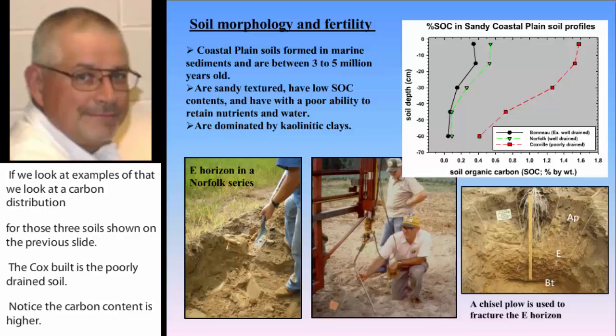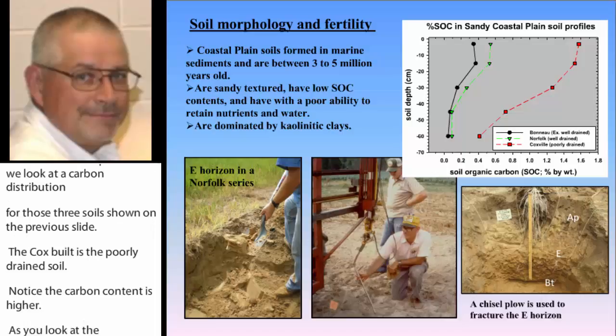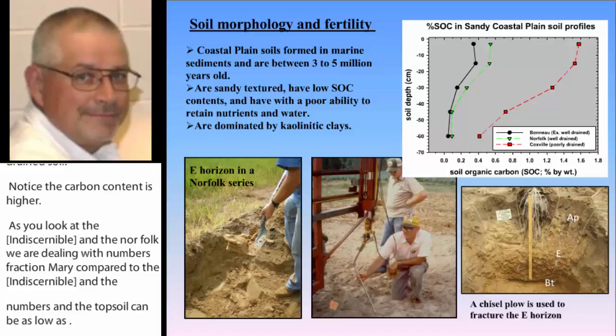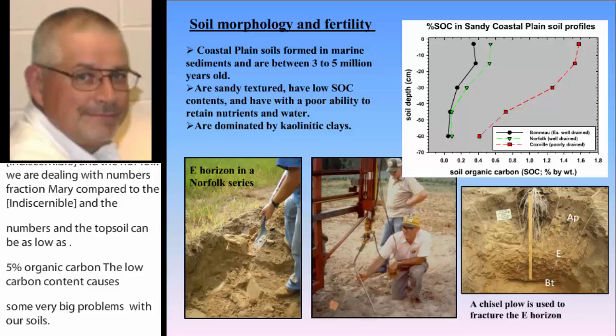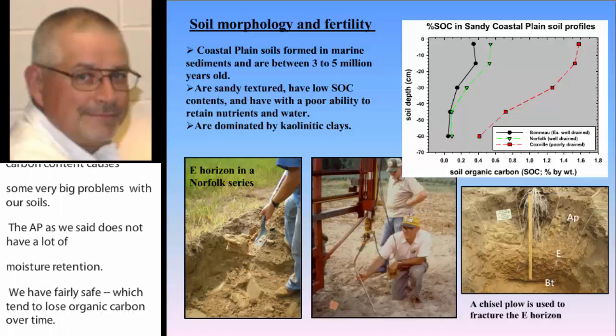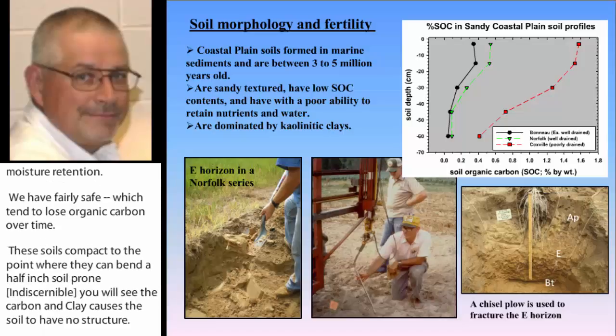The low carbon content causes very big problems. The Ap does not have a lot of moisture retention capacity. We have fairly thick E-horizons which tend to lose organic carbon over time. Consequently, these soils compact to the point where they could bend a half-inch soil probe. If you dig a soil pedon, you'll see that the block of carbon and clay causes the soil to have no structure. This is detrimental for water availability because roots can only grow in the Ap — they cannot get through the E horizon when it gets hard as cement.